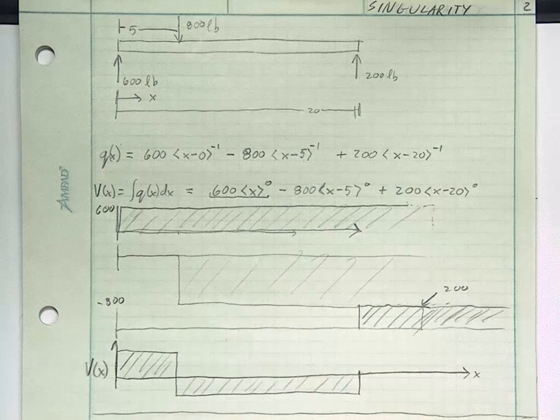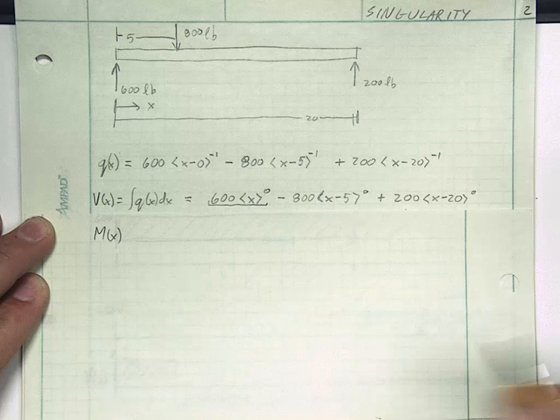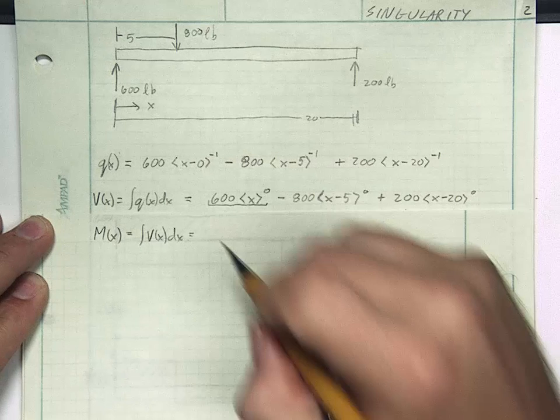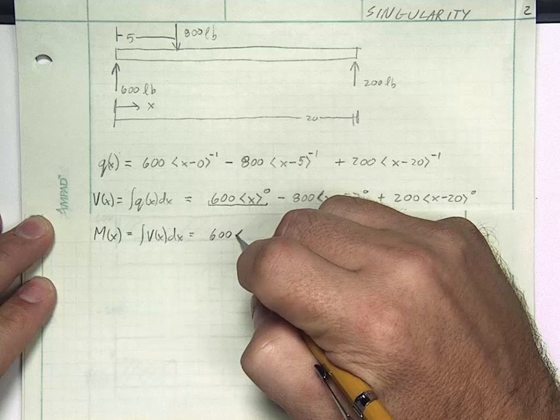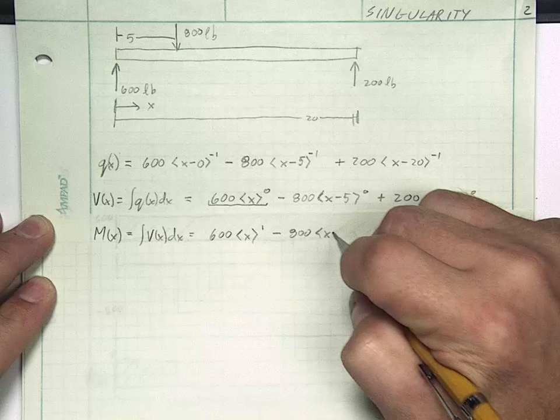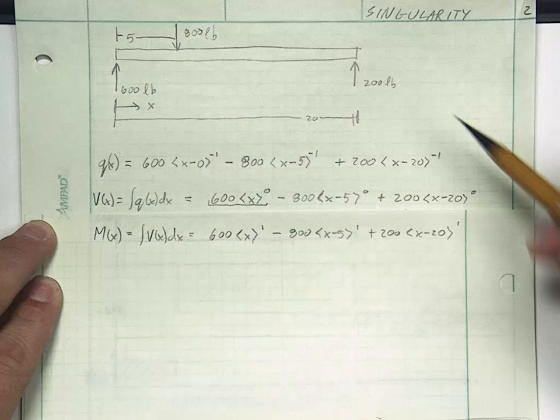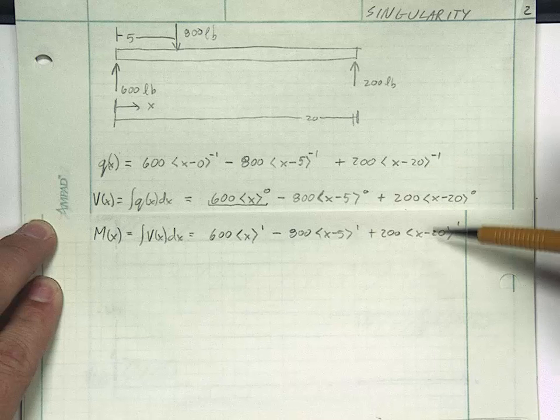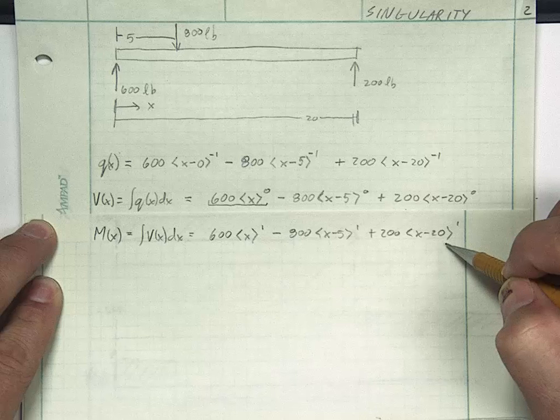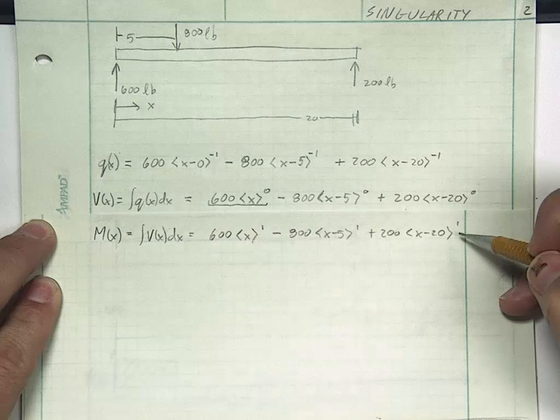Let's do the same thing for a moment diagram. Going back now and starting with the shear diagram that we just derived, and remember that m of x is the integration of v of x dx. So let's integrate this function: 600 integrated x, it's now a ramp, minus 800 x minus 5 to the first power, plus this last term 200 x minus 20 to the first. I want to point out that this is not even turning on until we're finished with the beam. It turns out I really don't even need to evaluate this last term because it only affects the equation when the equation is no longer on the beam.